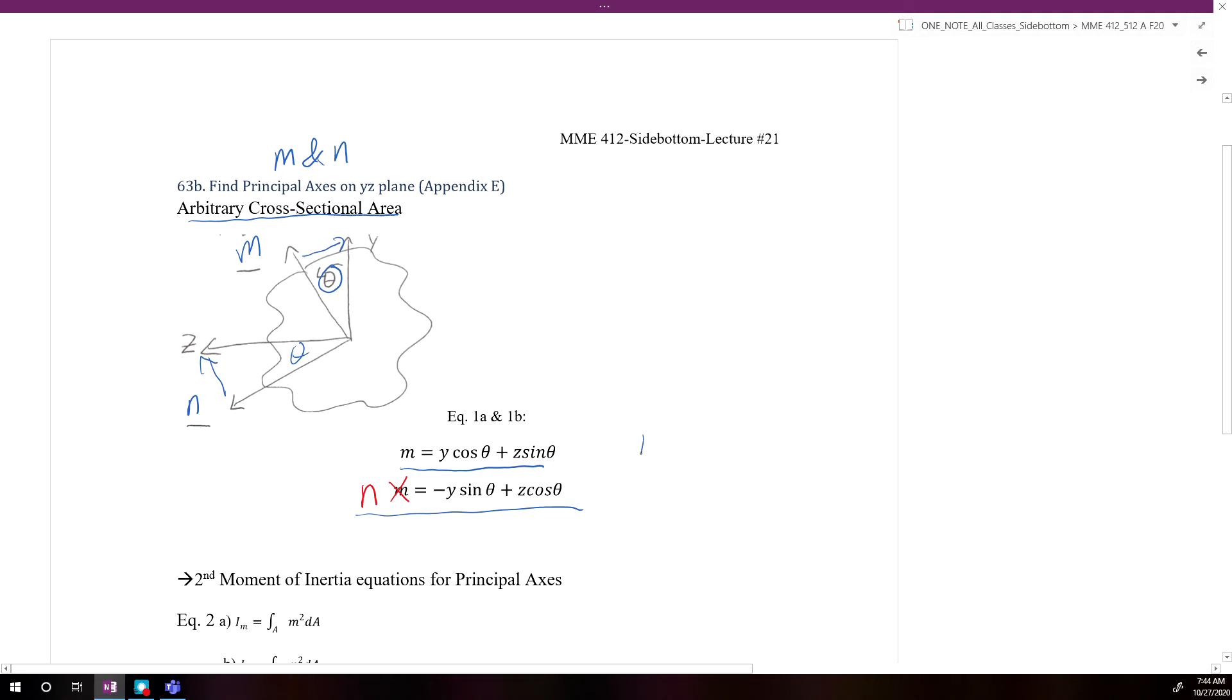We could rewrite these two equations in terms of a matrix. We can set M and N equal to cosine theta, sine theta, minus sine theta, cosine theta, and we have y and z.